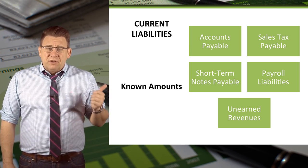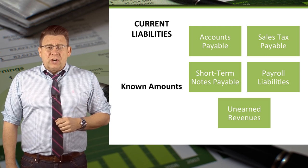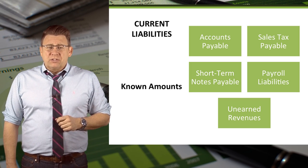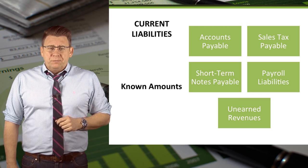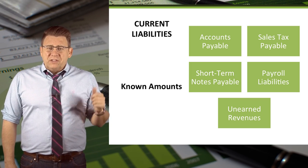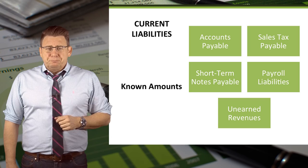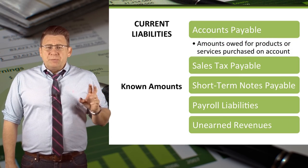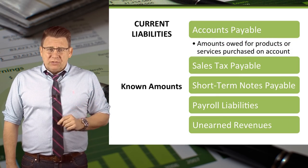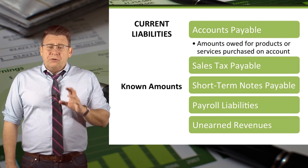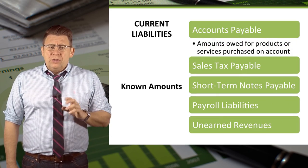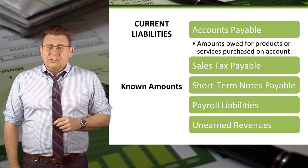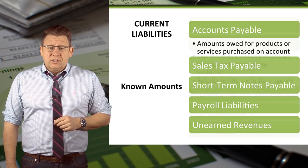Here is a list of common current liabilities whose amounts would be known. The accounts payable account is used for amounts owed to vendors for products or services purchased on account.